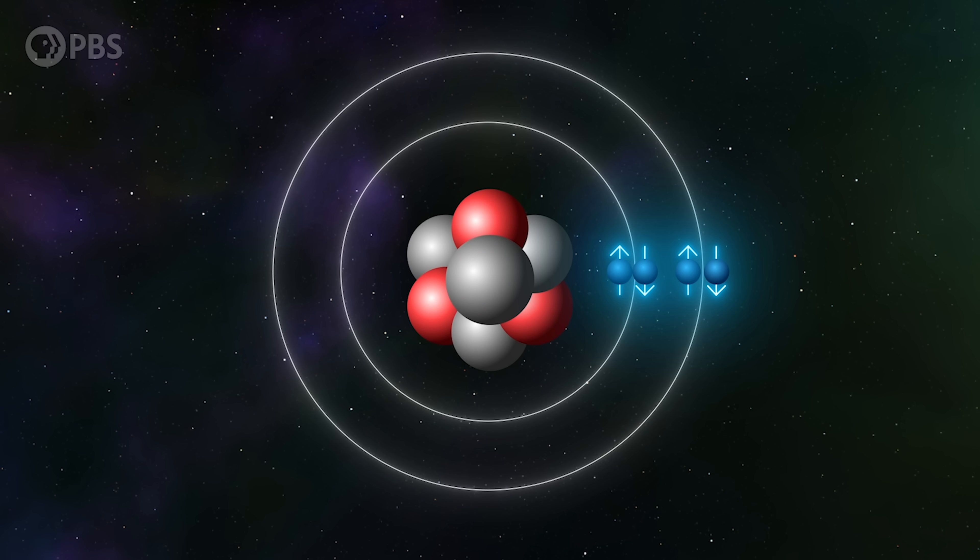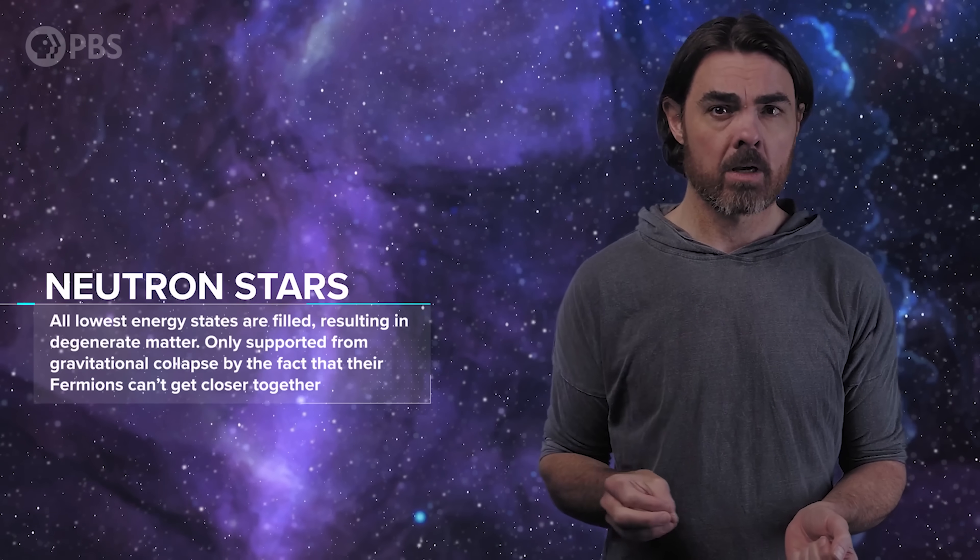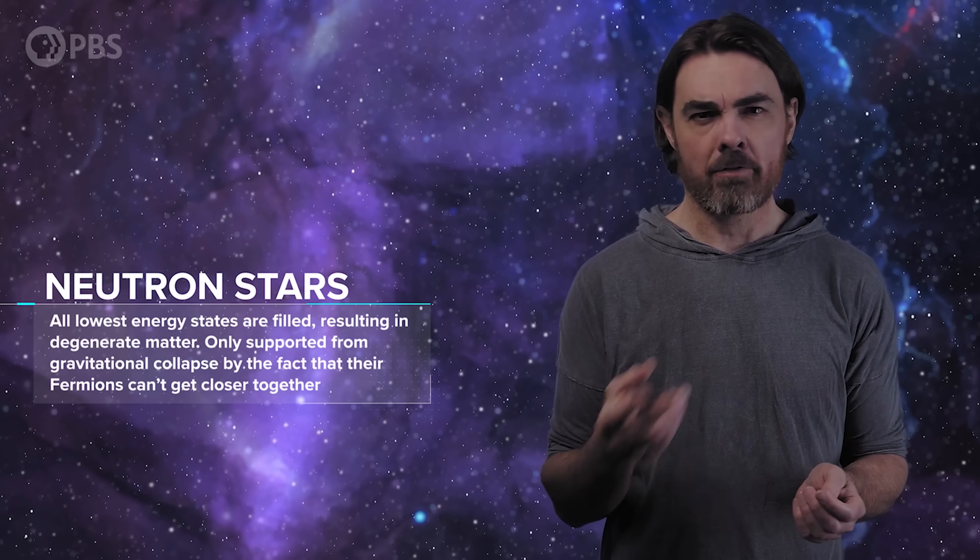This leads to nice things like the fact that electrons in atoms can have only one electron per energy shell. Well, actually, two electrons per shell because electron spin allows up to two electrons to be distinguishable from each other with opposite-pointing spins. But the result is that atoms are much larger than they would be if electrons were bosons. And it's why we have chemistry and structure in this universe at all. The strange behavior of Fermi-Dirac statistics also leads to some of the weirdest objects in the universe, white dwarves and neutron stars, where all of the lower energy states are filled, resulting in what we call degenerate matter. These things are only supported from gravitational collapse by the fact that their fermions can't get any closer together. And it was by using Fermi-Dirac statistics that we figured out how massive a star needed to be in order to collapse through the white dwarf phase and through the neutron star phase into a black hole.